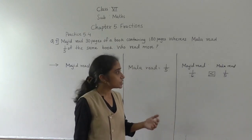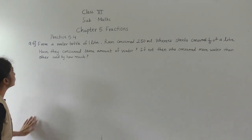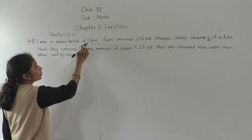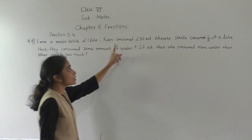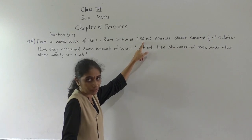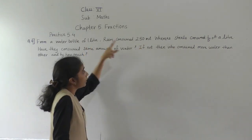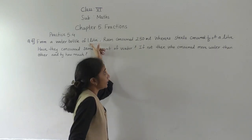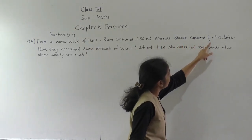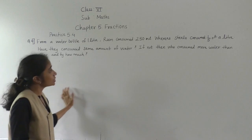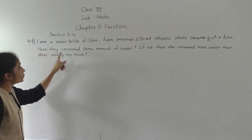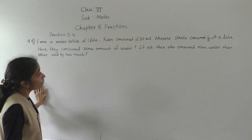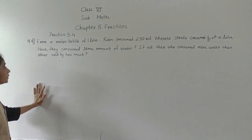Both methods I have shown you — it is up to you which way you write. Let's solve question number 9. From a water bottle of 1 liter, Ram consumed 250 milliliter. Whereas Sheena consumed 1 fifth of a liter. Have they consumed the same amount of water? If not, who consumed more and by how much?